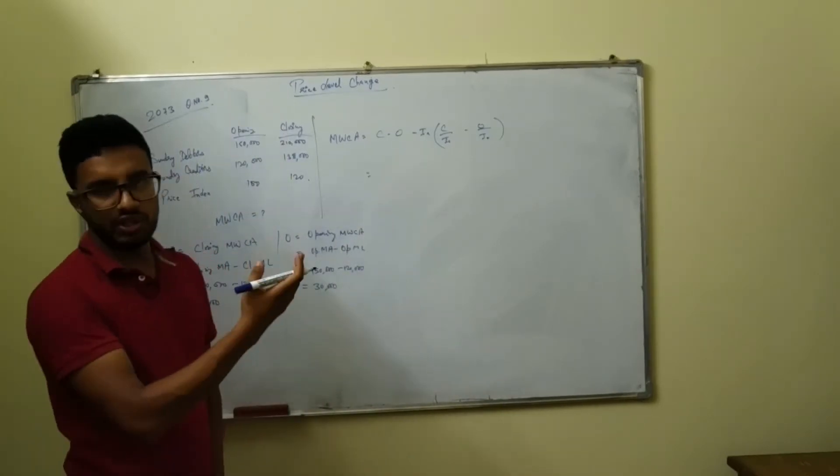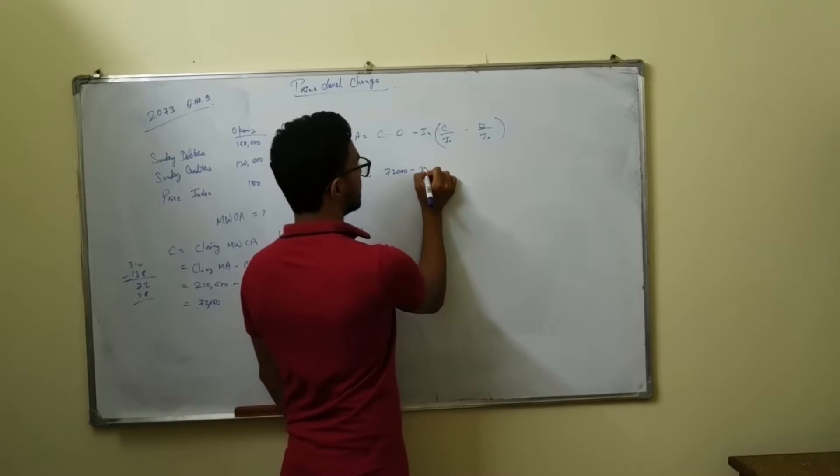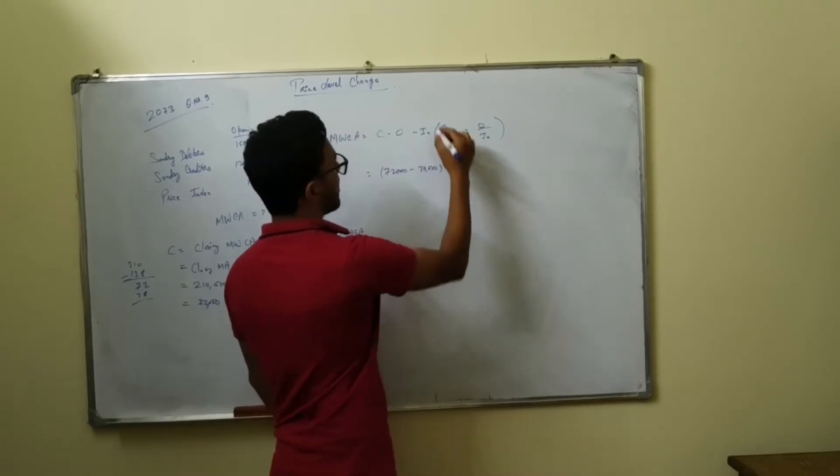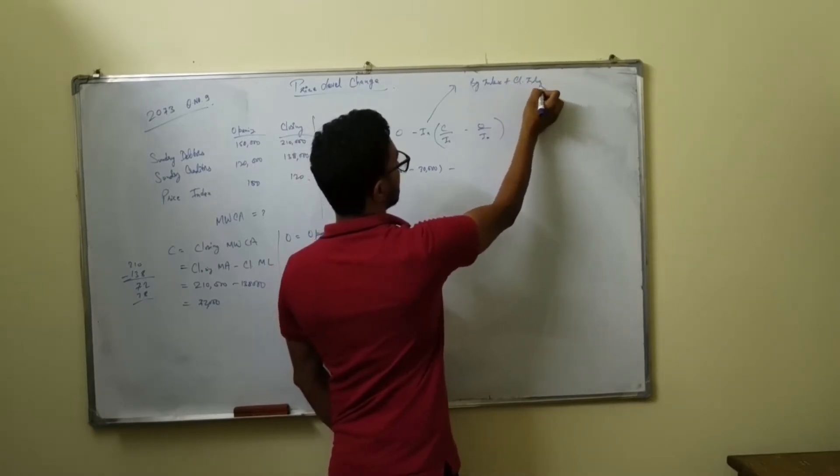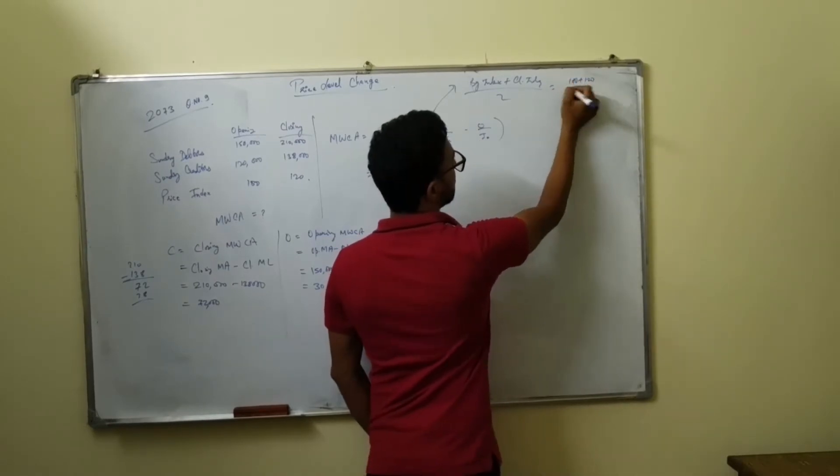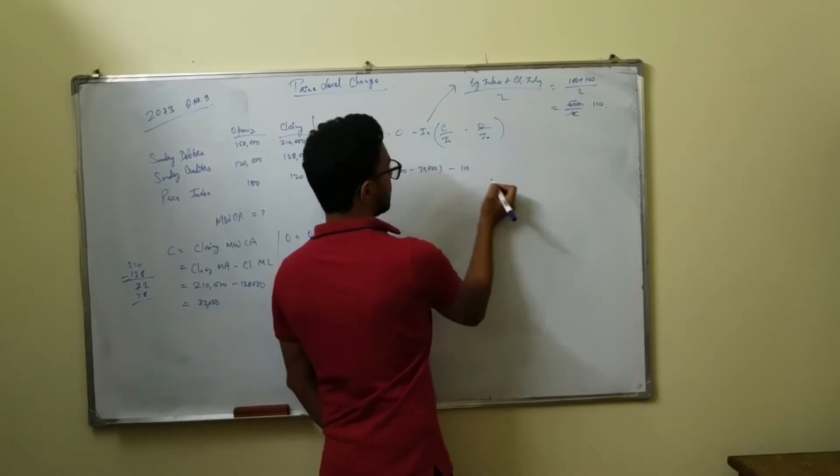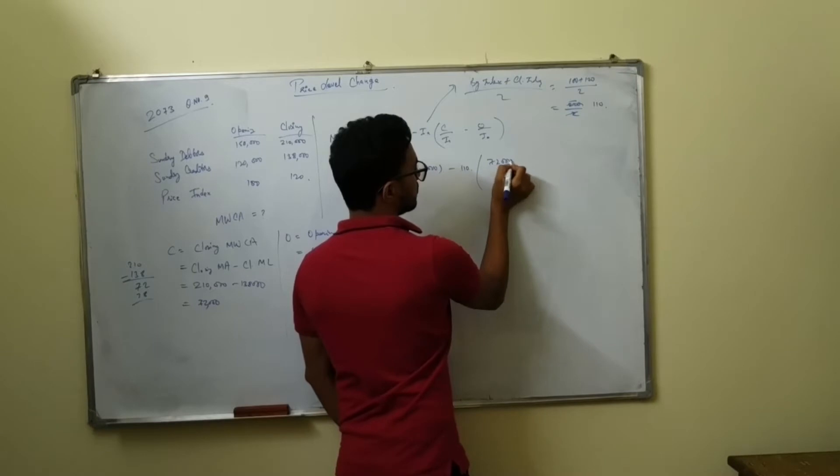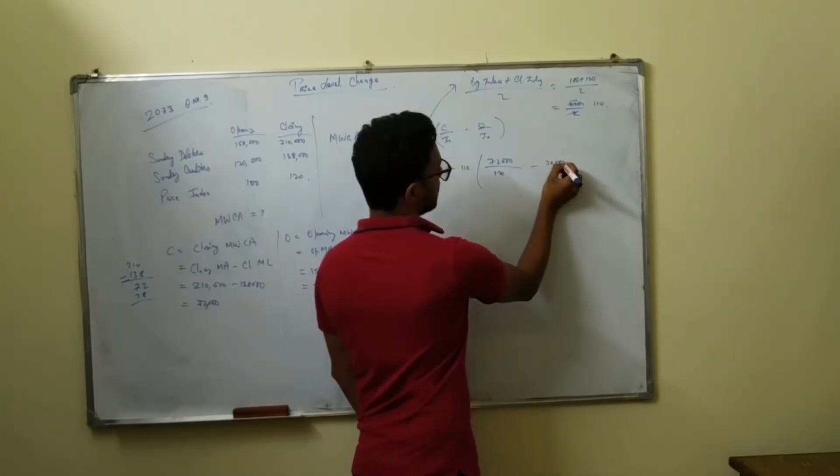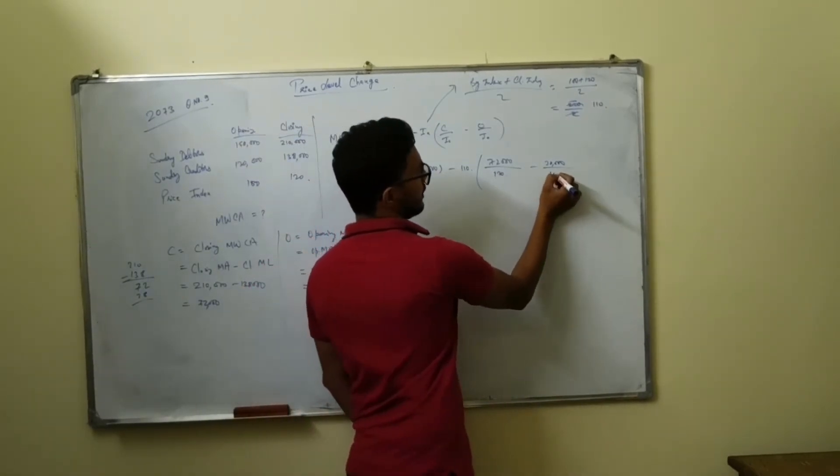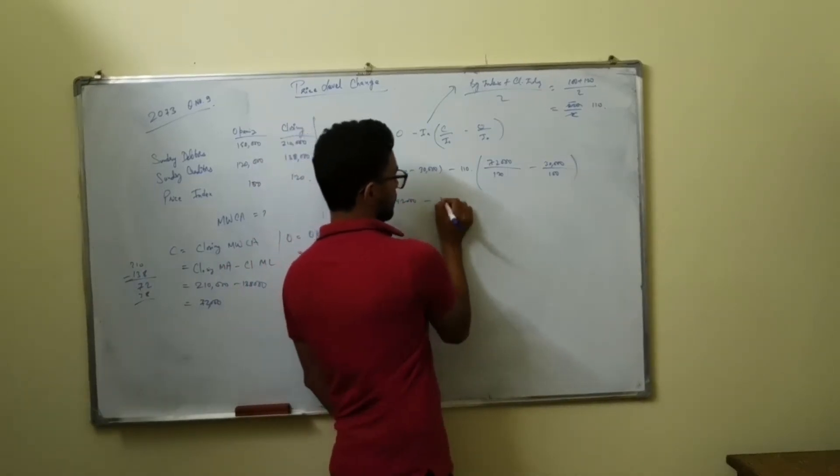So what we do is 72,000 minus 50,000. Beginning index plus closing index divided by 2. Beginning index 100 plus closing index 120 divided by 2, 220 divided by 2, this will give us 110. Closing index 120 minus 30,000 opening working capital. This will give us opening index 100.